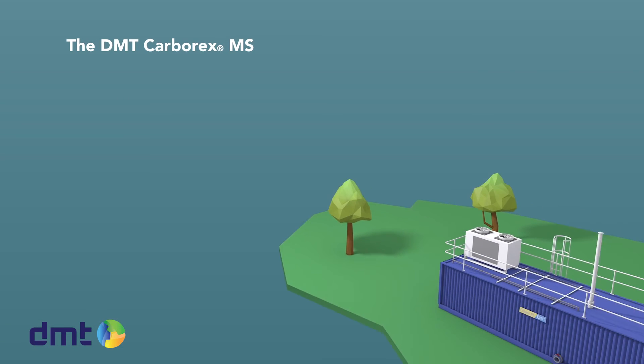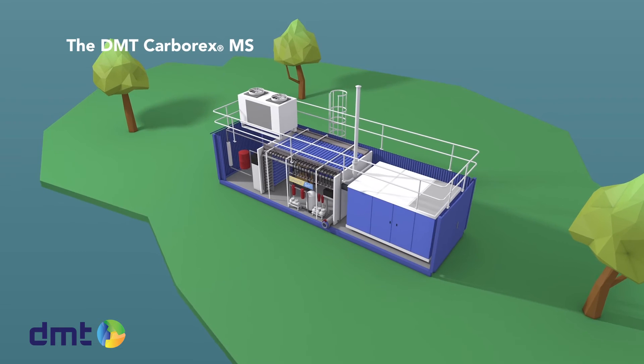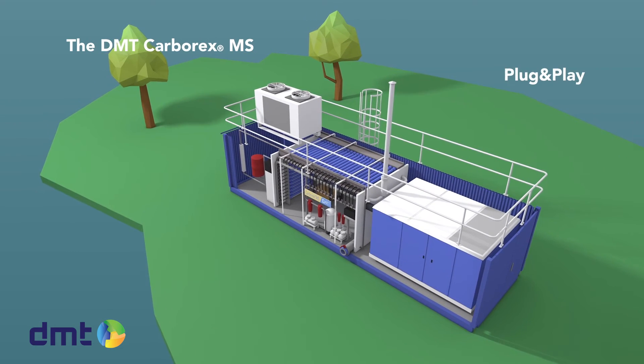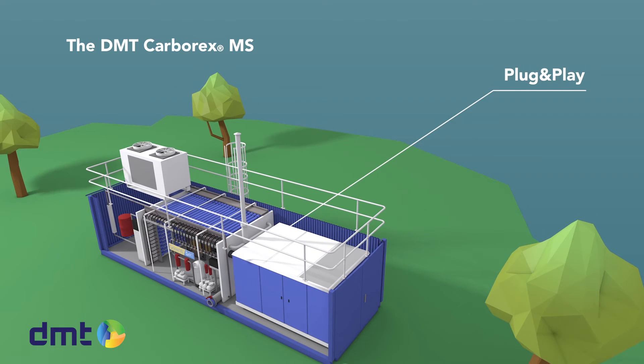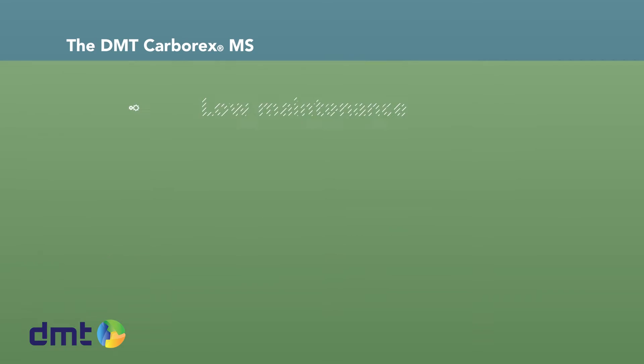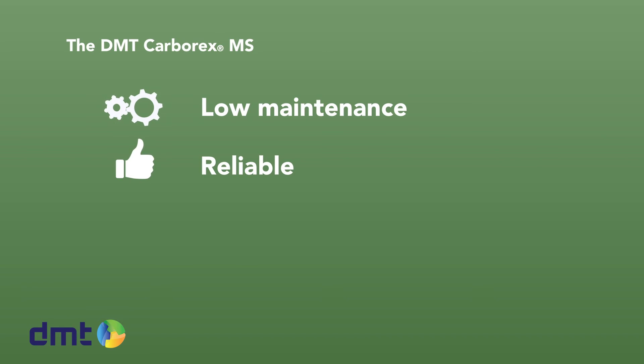The Carborex MS is an excellent example of what DMT calls plug-and-play technology. The whole system can be started up with one simple press of a button. Due to the limited mechanical parts, the system is very low in maintenance. Combined with the ease of operation, this results in the most reliable system to upgrade biogas on the market. This ensures our customers maximize their gas production, making it a clear and prosperous solution.